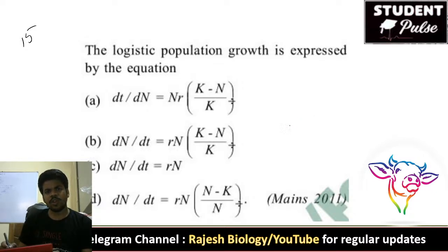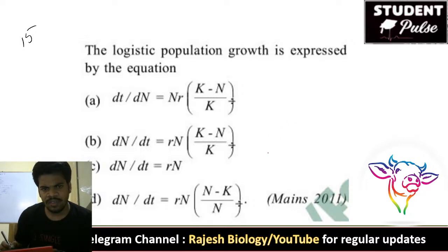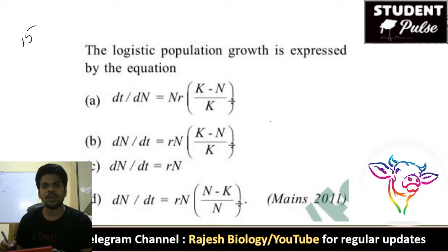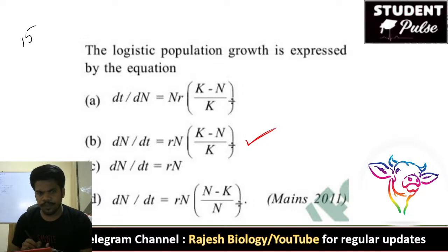Fifteenth question: the logistic population growth is expressed by the equation dN/dt = rN × (K minus N) / K. This equation was shared at the beginning of the session. The right answer is option B.